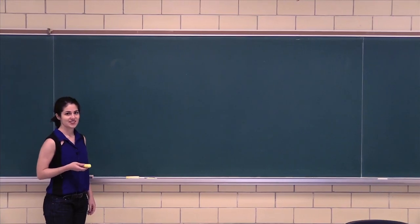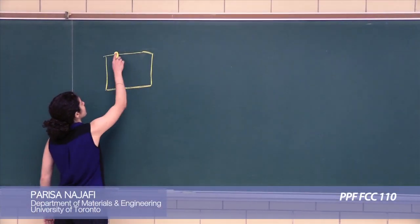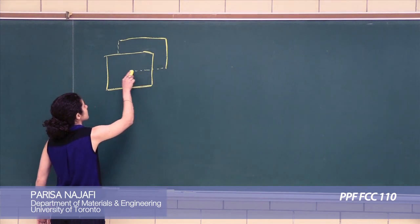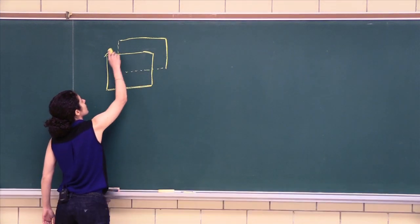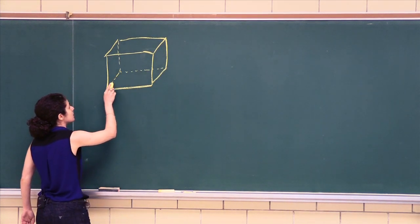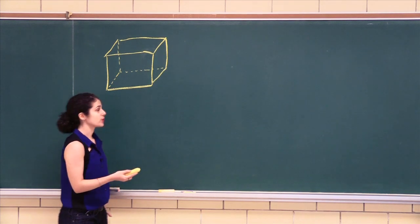So let's start off by drawing the FCC structure and we know that an eighth of an atom goes in each corner.